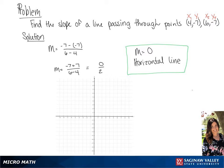First we're going to plot 4, negative 7. Now we are going to plot 6, negative 7.